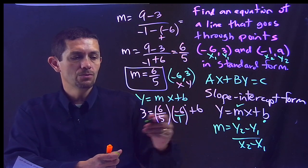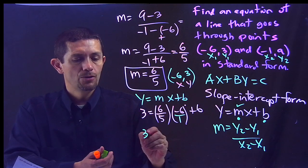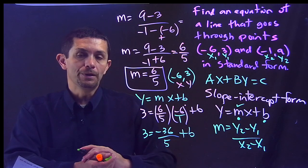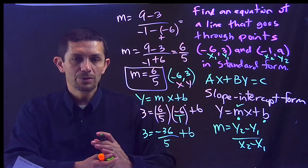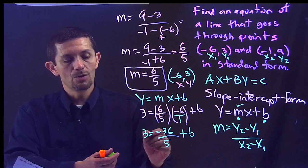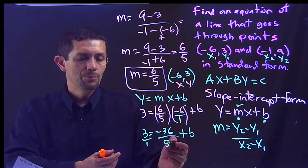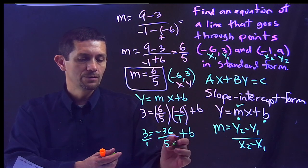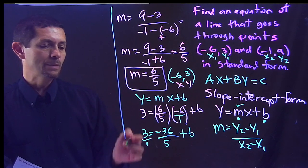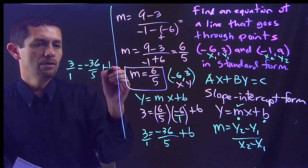To make it easier, I'm going to write negative 6 as a fraction over 1. Multiplying fractions: top times top, bottom times bottom. So 6 times negative 6 is negative 36, and 5 times 1 is 5. So I have 3 equals negative 36 over 5 plus b. Now I need to cancel that fraction, so I add 36 over 5 to both sides. On the left I need to compute 3 over 1 plus 36 over 5.